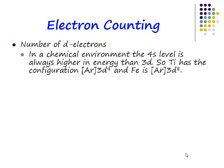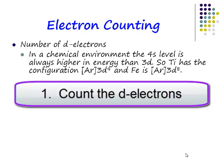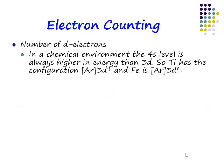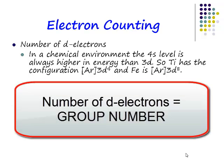First of all, we need to work out how many d-electrons we've got in our system. Now, how difficult can that be? Well, it's the group number.